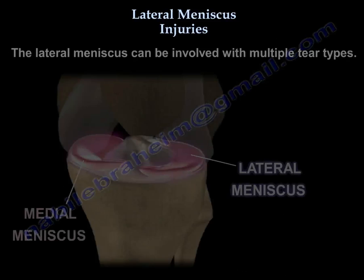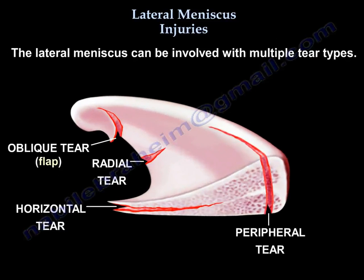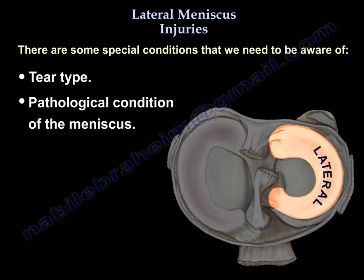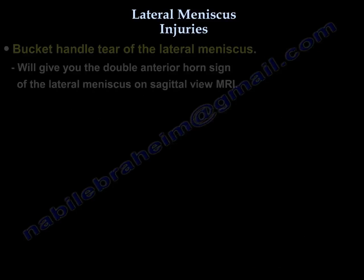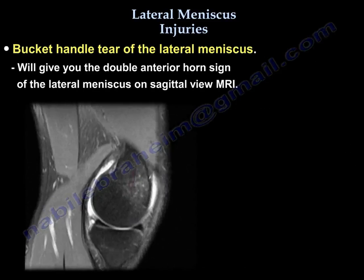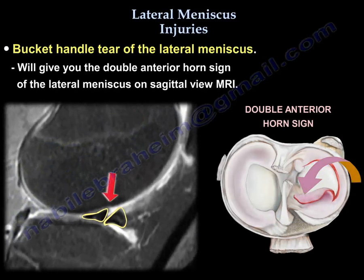The lateral meniscus can be involved with multiple tear types and we're going to give some examples and show some MRIs. There are some special ones we should be aware of, either the tear type or the pathological condition of the meniscus itself. Let's start with the bucket handle tear of the lateral meniscus, which will give you a double anterior horn sign on sagittal MRI. These are examples of involvement of the anterior horn of the lateral meniscus.